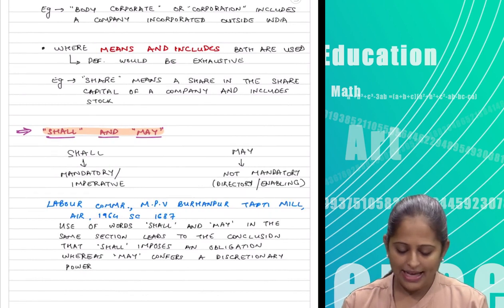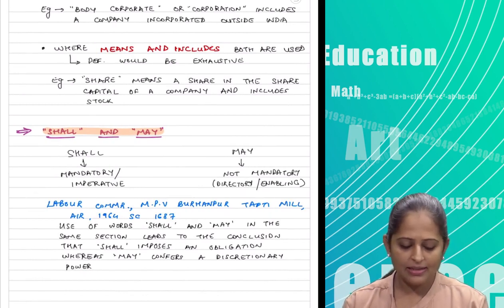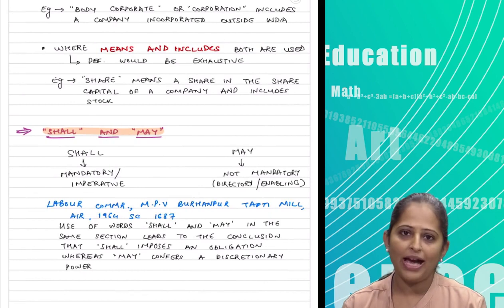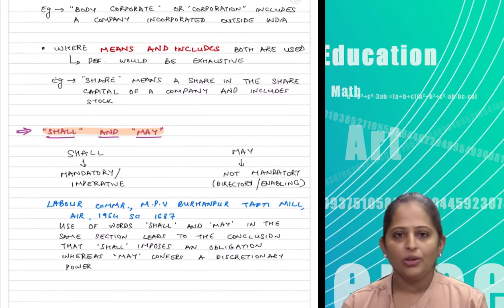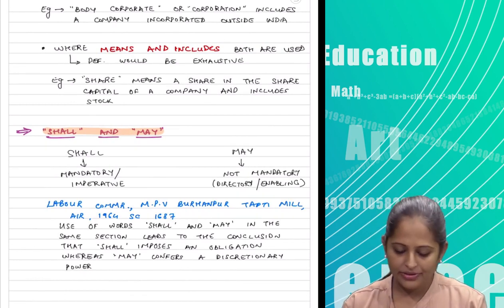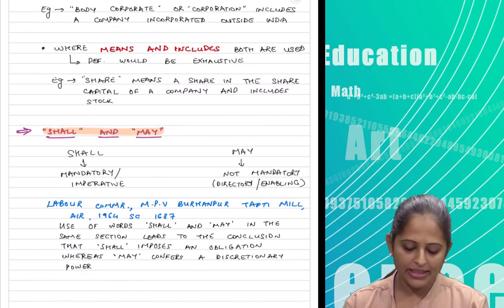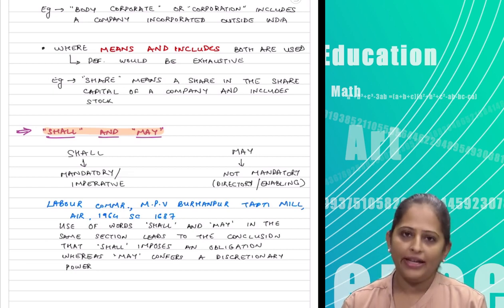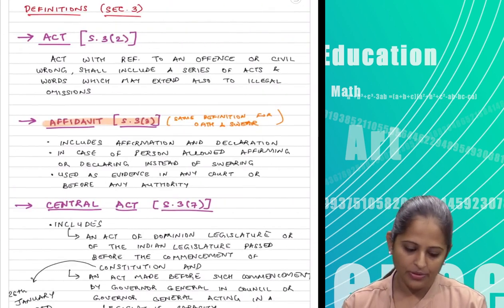'Shall' and 'may' is basic English. 'Shall' is a mandatory provision — whenever 'shall' is used, it is something you have to do. When 'may' is used, it is not a mandatory provision. There is a Supreme Court case law in that regard which is nice to remember.